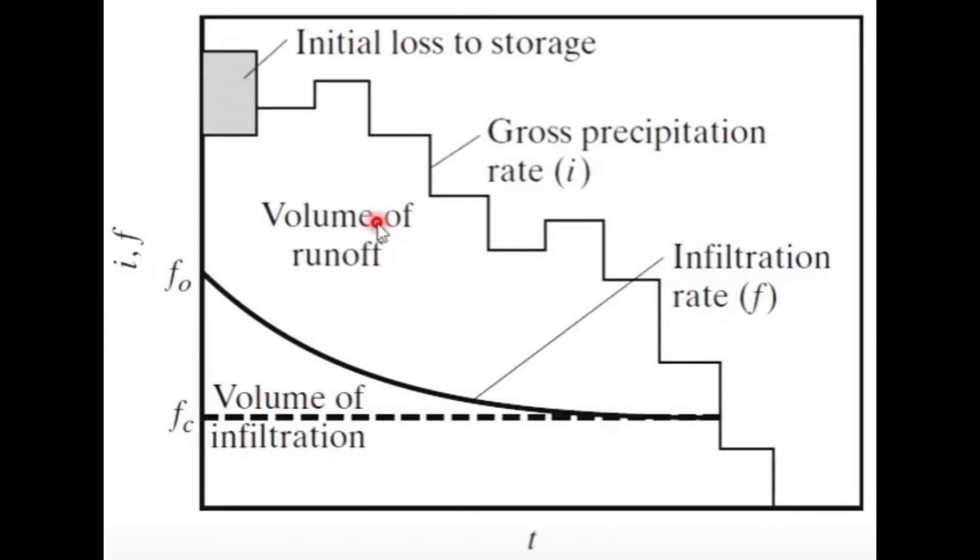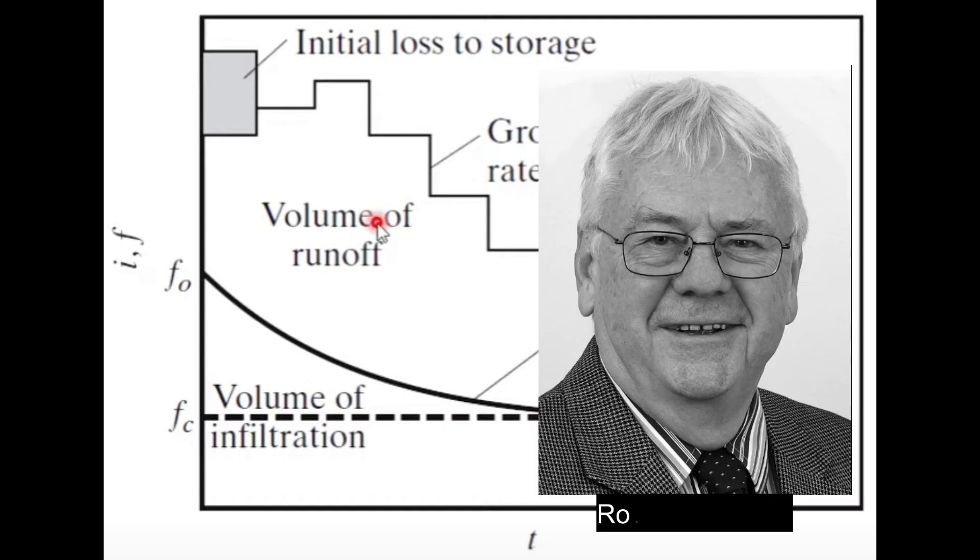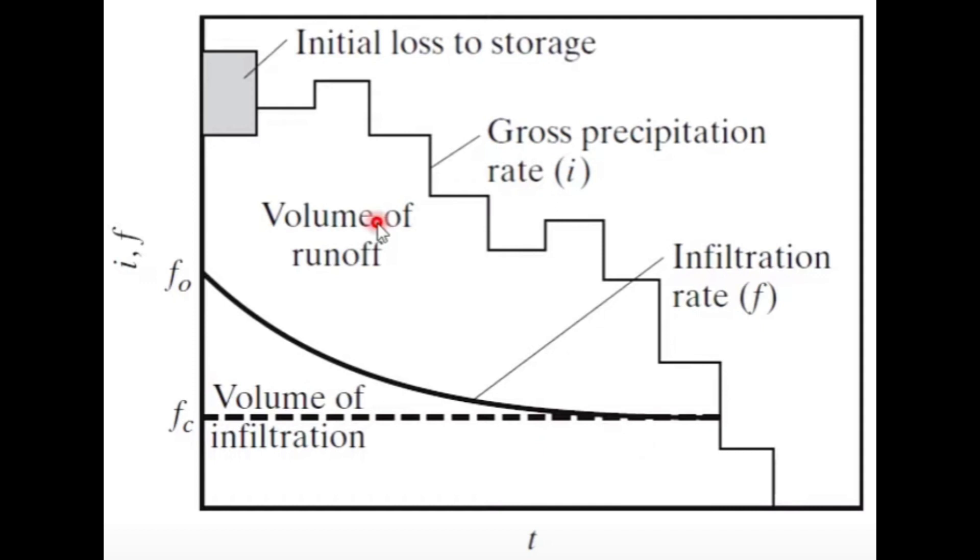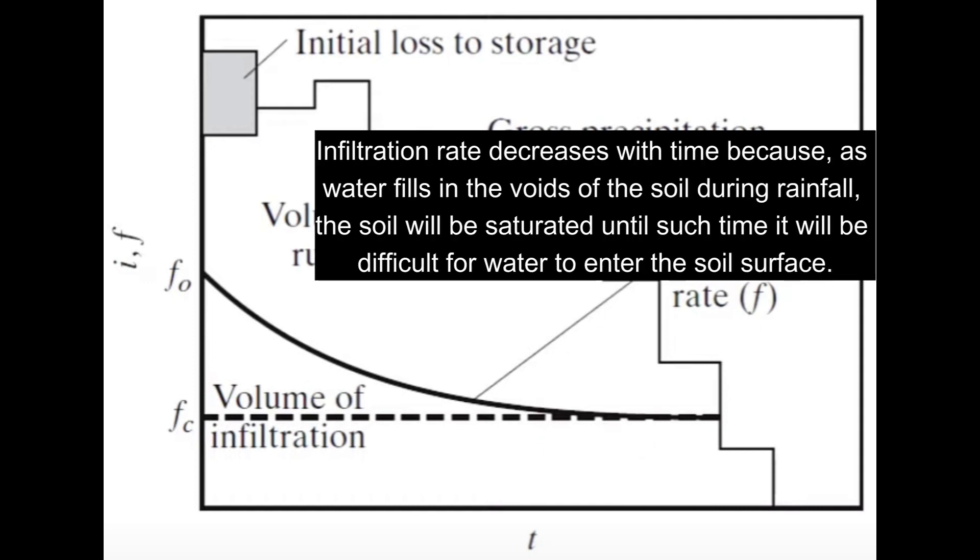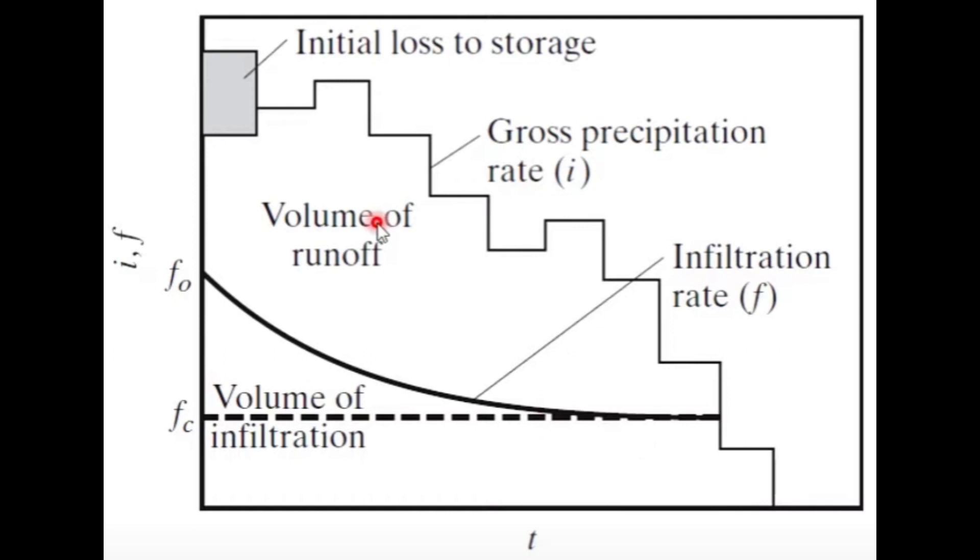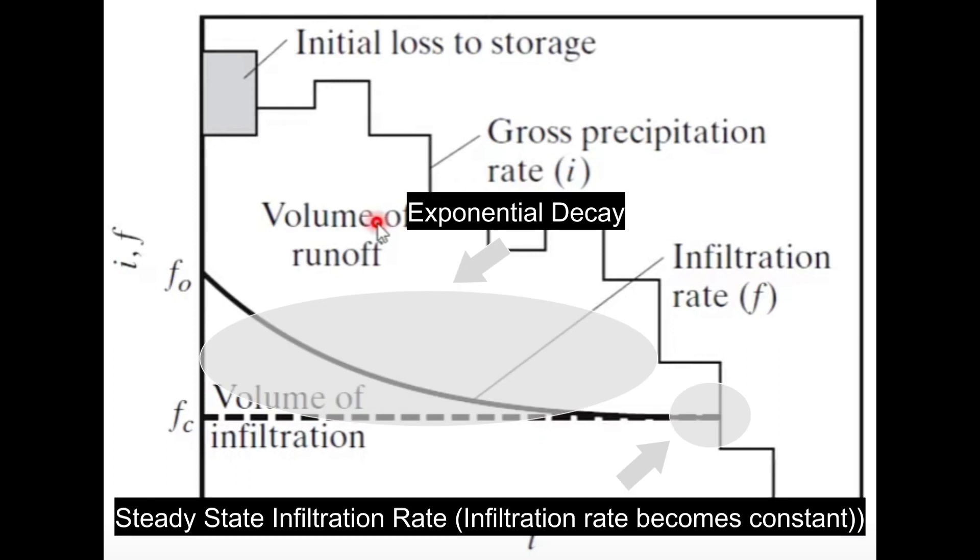In this particular video, we're gonna focus on the Horton Infiltration Capacity Curve. The Horton Infiltration Capacity Curve is a graphical representation of how the rate of infiltration changes over time during a rain event. It's named after the hydrologist Robert E. Horton, who developed it in the early 20th century. The curve typically starts at a high infiltration rate and then decreases over time as the soil becomes saturated. Eventually, it levels off at a constant infiltration rate which represents the maximum rate at which water can enter the soil. This maximum rate is referred to as the Saturated Hydraulic Conductivity or the Saturated Infiltration Rate. But in this video, we'll refer to it as the steady state infiltration rate. The curve is often depicted as a graph with infiltration rate on the y-axis and time on the x-axis. It's commonly used in hydrology and soil science to estimate the amount of water entering the soil during rainfall events and to predict runoff.